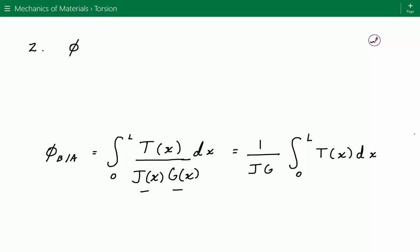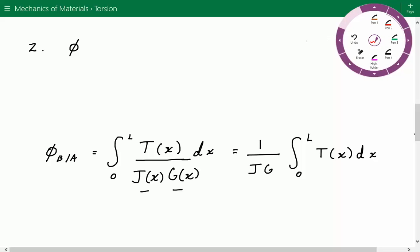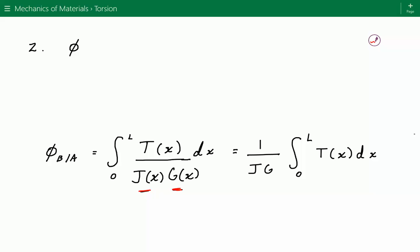We notice in this integral that J and G—because the cross-sectional area is constant throughout the whole shaft, J will be constant, and because the material is constant throughout, G will be constant. These are not a function of length, so we can move them outside of the integral to simplify things.